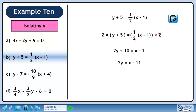Next, we get 2y equals x minus 11. Divide both sides by 2 to get y equals 1 over 2x minus 11 over 2. This is our final answer.